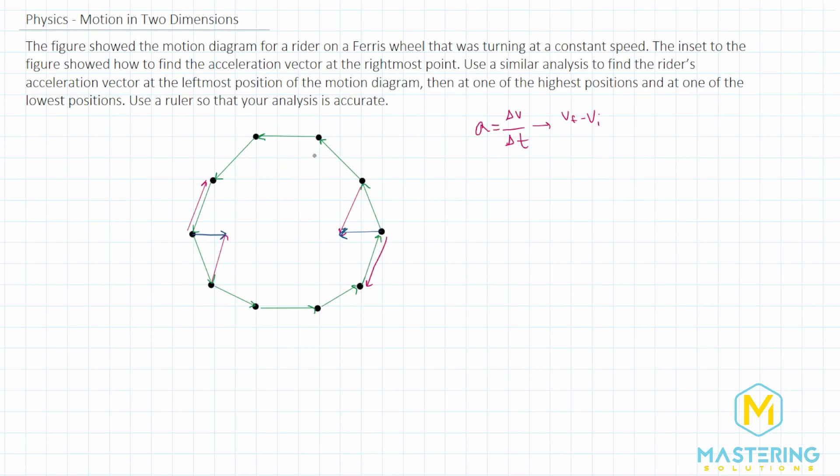Doing the same thing for the top, we'll do this one right here. So this is the initial, and this is the final. So the initial, we'll just turn it backwards, and then we'll slide it up here. It's going like that. So it's also pointed towards the center of the circle.